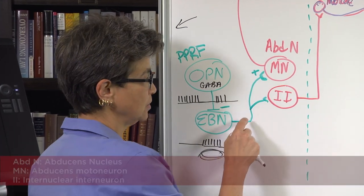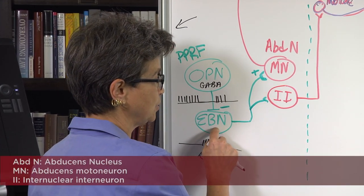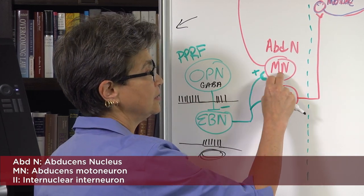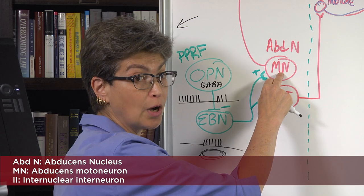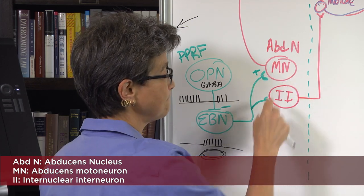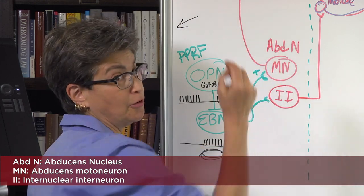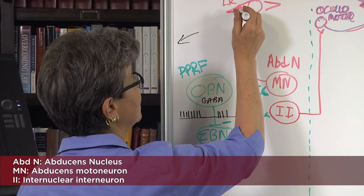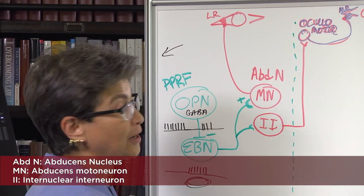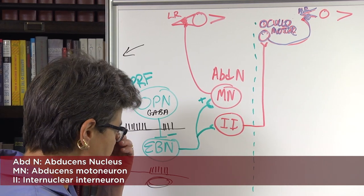The excitatory burst neuron now activates neurons in the abducens nucleus. The first type of neuron it contacts is the motor neuron in the abducens nucleus — on the same side. This motor neuron projects to the lateral rectus, causing it to contract and abduct the ipsilateral eye.